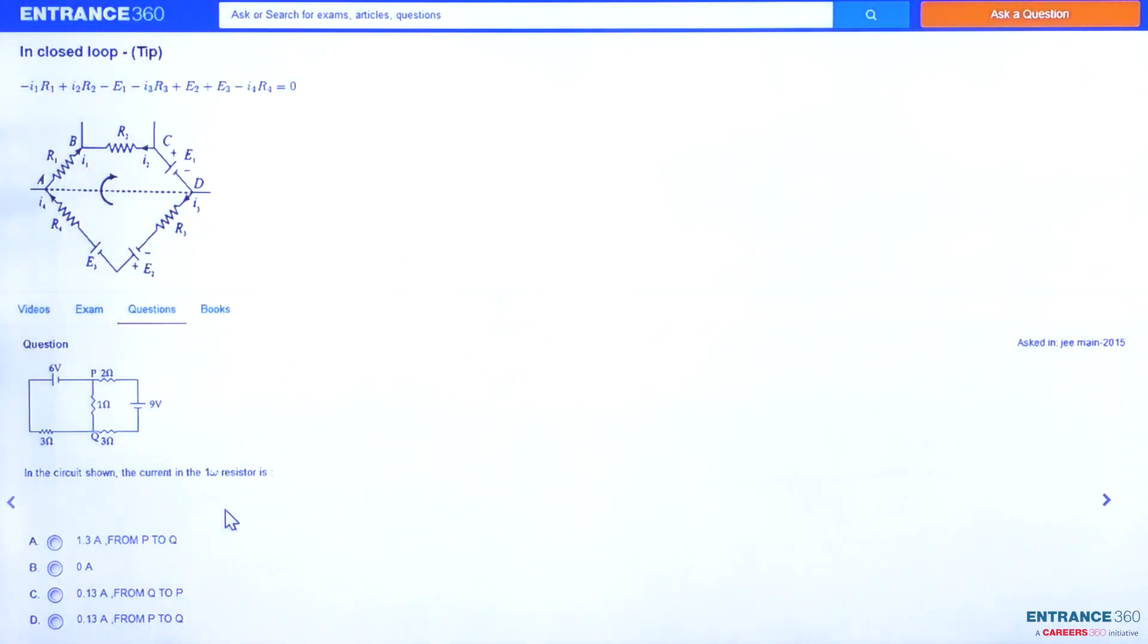Hello everyone, let's discuss a question from the chapter Current Electricity. This is a question from JEE Main 2015. The question is: the circuit shown, the current through one ohm resistance.